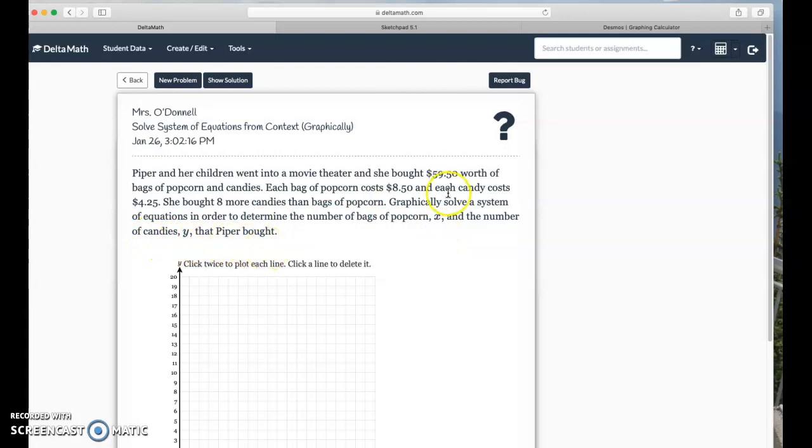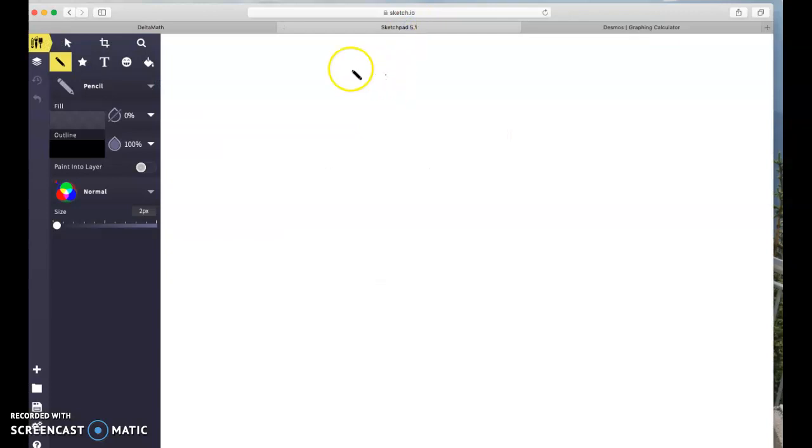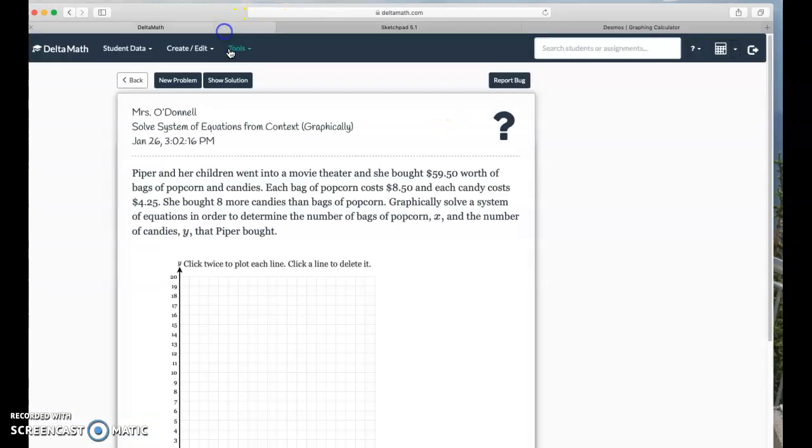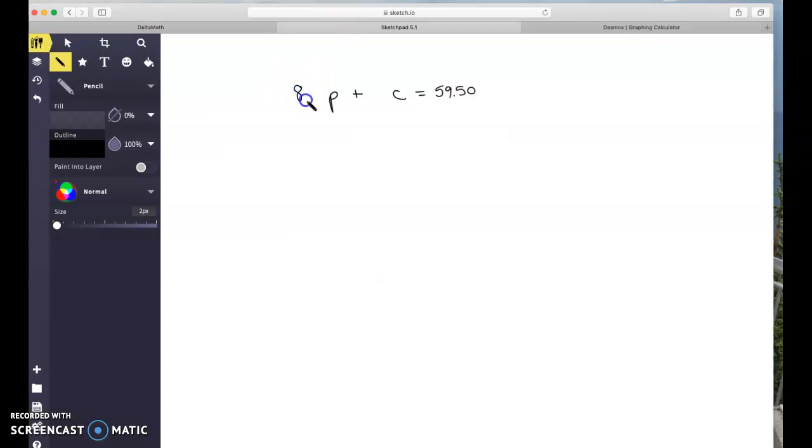We're talking about popcorn and candy and we know that all together she spent fifty nine dollars and fifty cents. We also know that each bag of popcorn is eight dollars and fifty cents and each candy is 4.25. So if we're looking for our total cost we can multiply that out, so 850 times the number of popcorns plus 425 times the number of candies will give us the total amount that she spent.